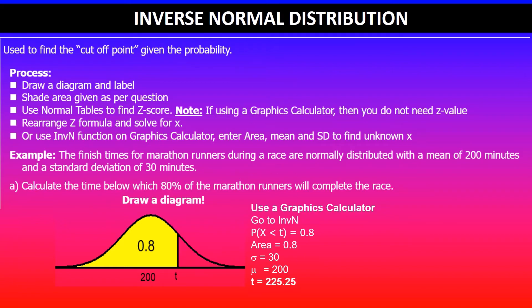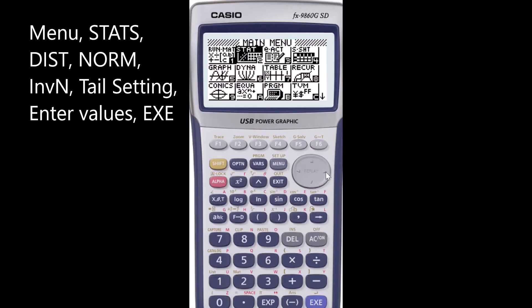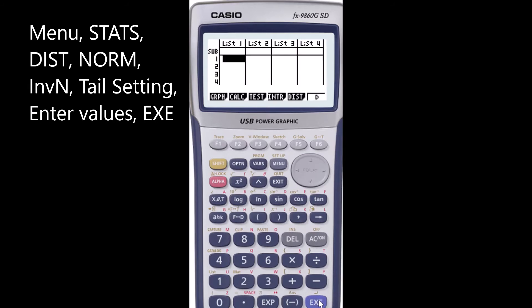Once you've entered those, that will give the value of the time below which 80% of the marathon runners will complete the race. From the main menu go to Stats menu and then F5 to get the distributions. In this case we are looking at normal distribution which has three options.